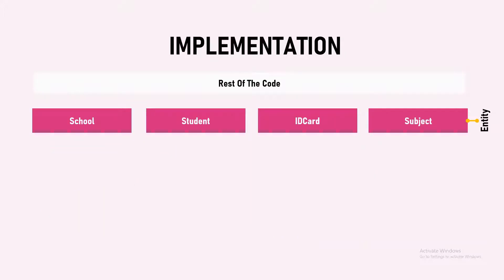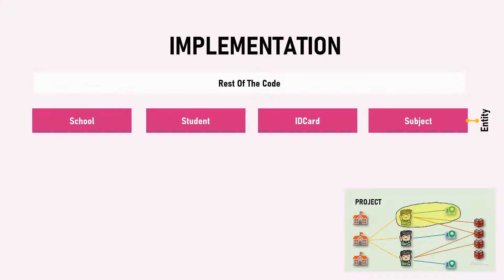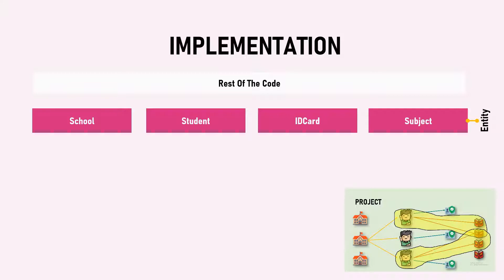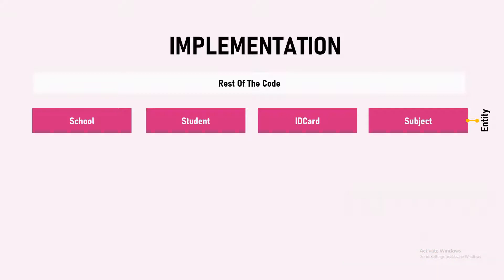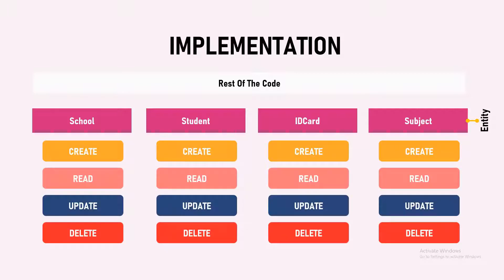Now let's more precisely understand what is a repository structure with respect to the project that we discussed in the previous video. In that video we discussed a very simple project that contains four entities: school, student, ID card, and subject. These are the four entities our code relies on. Now, I told you that the repository pattern can handle CRUD operations — create, read, update, delete. So that means each entity should have options to create, read, update, and delete. How can we write all these methods on each of these entity implementations?